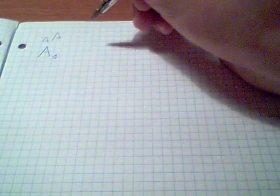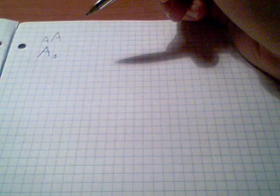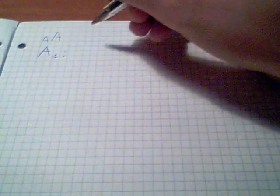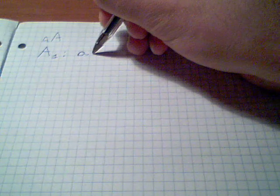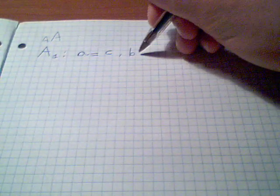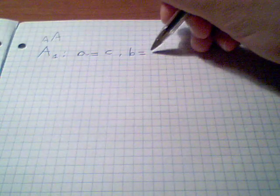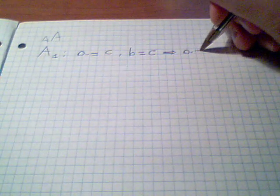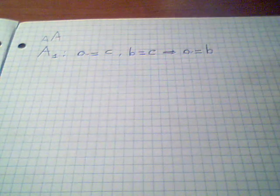Axiom number one says that if two things are equal to another thing they will be equal to each other. Using our algebra we can say that if A is equal to C and B is equal to C, then A will be equal to B. Very evident one.